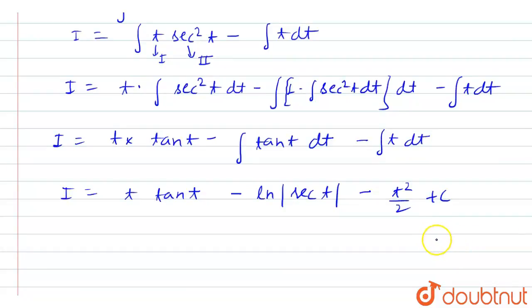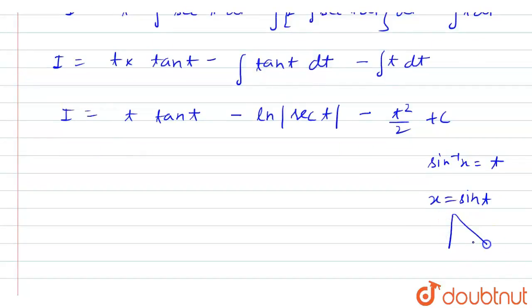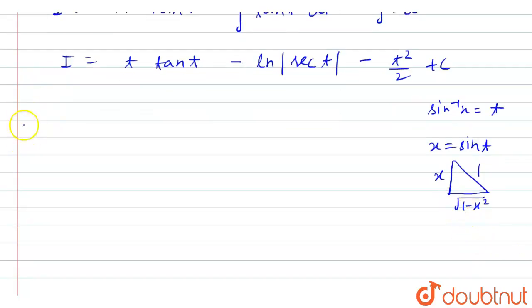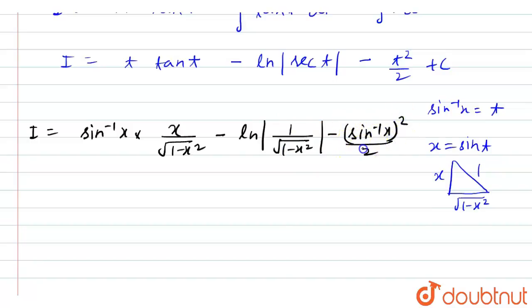Now, we supposed that sine inverse x is equal to t, so x is equal to sine t. If we see a right angle triangle, sine equals perpendicular upon hypotenuse, which is x by 1, so the base is square root of (1 minus x squared). From here, t is sine inverse x, tan t equals perpendicular upon base, that is x upon square root of (1 minus x squared), and sec t equals hypotenuse upon base, which is 1 upon square root of (1 minus x squared). So we have the expression minus (sine inverse x) whole squared by 2, plus c.